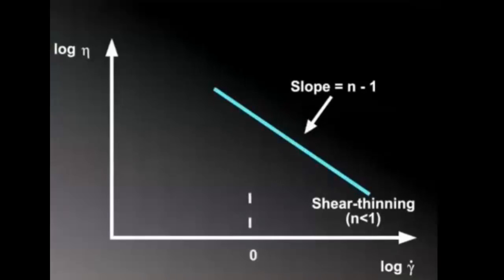The slope of the line is equal to the shear index minus 1, and k is the value of the viscosity when the shear rate is equal to 1, or the log of the shear rate is equal to 0.